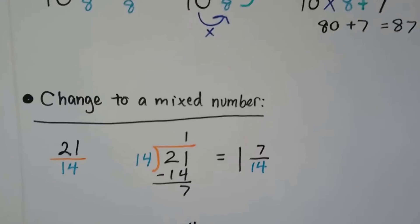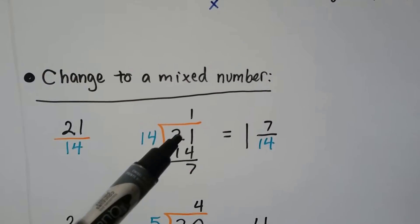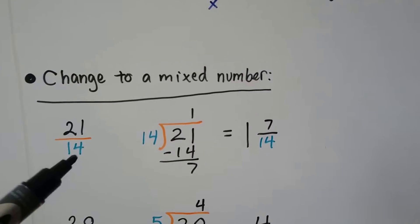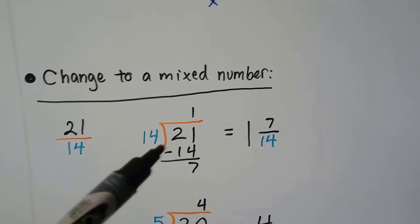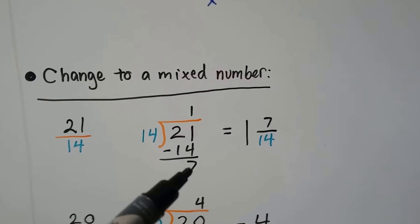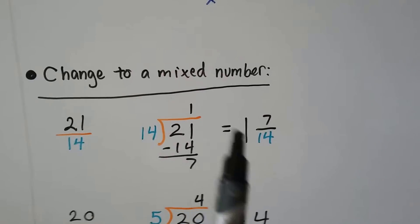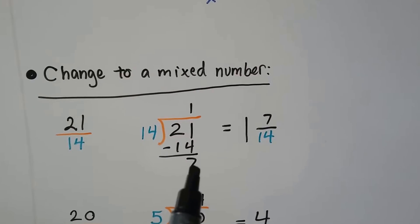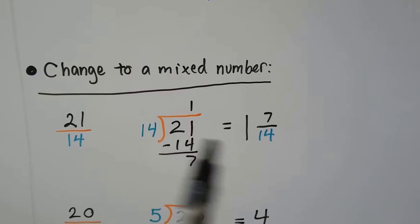If we need to change it to a mixed number, 21 fourteenths, how many times can 14 fit into 21? It's 21 divided by 14. One time. We subtract that 14 and we get a 7 left over. So our answer, our mixed number is a 1 because that's the quotient and the remainder is our numerator 7 and our 14 is our denominator, the divisor.